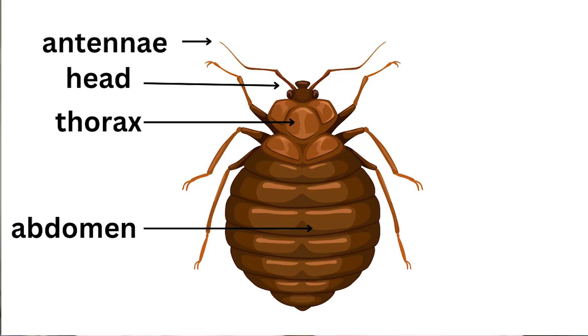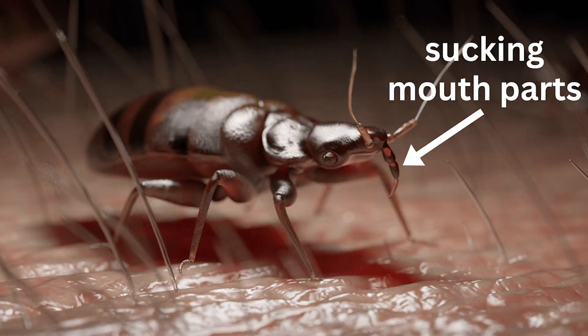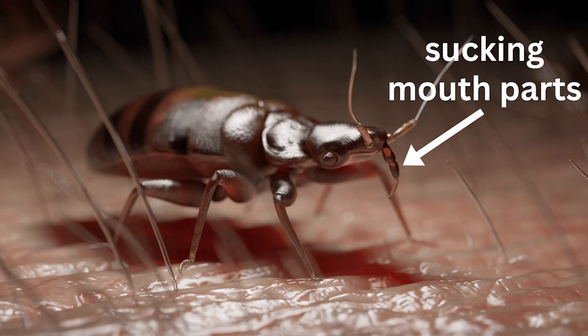The antennae of bed bugs are segmented and about half the length of their body. They use these antennae to sense their environment and locate potential hosts — essentially to find you. Bed bugs also have piercing, sucking mouthparts situated beneath their head, which they use to extract blood from their hosts.